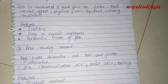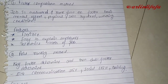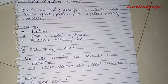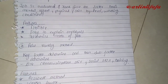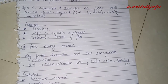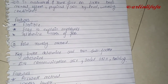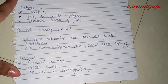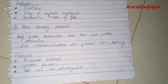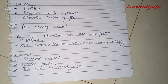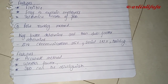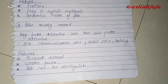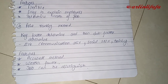The features of the analytical method include: flexible nature, and easy to explain to employees because we can determine the actual worth of a job. In the point ranking method, key factors are determined first, and then sub-factors are determined. For example, under the skill factor, we determine communication skill and other sub-skills. This makes it a more accurate method.